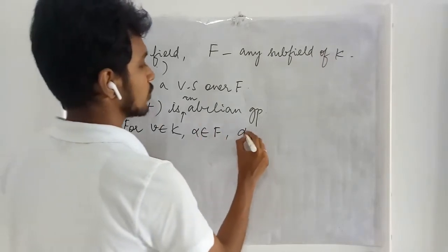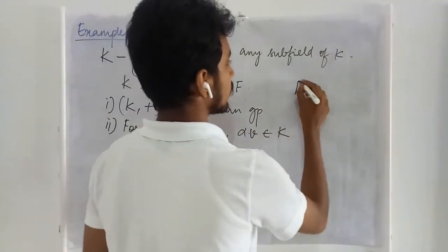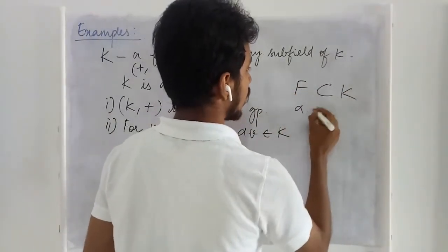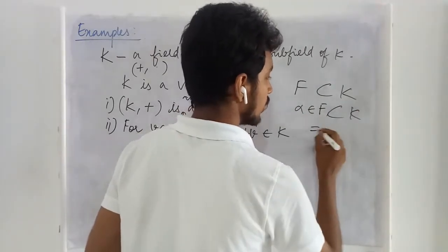Second thing, for some element in K and some element in F, we need to say this is a member of K. Since F is a subfield of K, all the entries of F are entries of K as well.